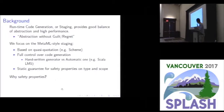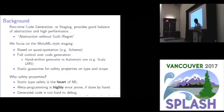We can statically guarantee the type safety and scope correctness on generated code. And maybe some people say, why do we stick to safety properties? We believe that static type safety is the heart of ML. So without that property, we don't say the language is ML. And as you know, everyone in this room may know that meta-programming is highly error-prone. Every day, I make some error when I write code generators. And if done by hand, generated code is very hard to debug. The previous speaker already has shown that generated code is much, much longer than the original code generator.